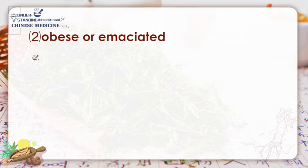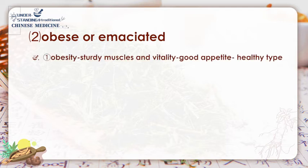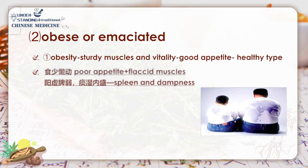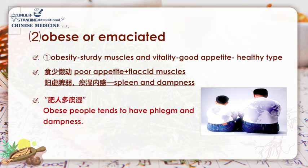The second aspect is obesity or emaciation. Regarding obesity, we should distinguish two situations. People with a heavy build but good appetite, strong muscles, and full vitality — that is a sign of healthy constitution and qi abundance. But if accompanied by poor appetite, flaccid muscles, and panting with exercise, these are signs of qi deficiency, mostly caused by retention of phlegm, fluid, and water dampness. That is why it is said that phlegm and dampness tend to accumulate in heavy people, or obese people tend to have phlegm and dampness.